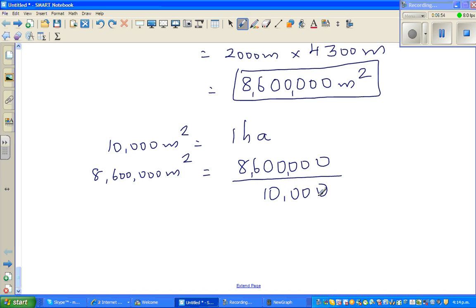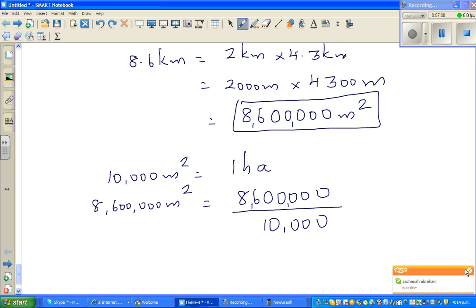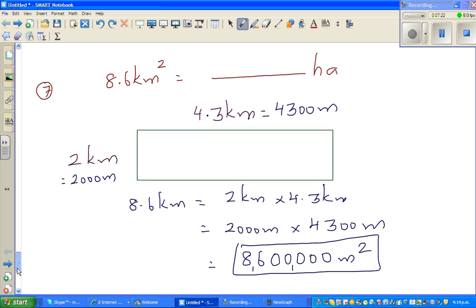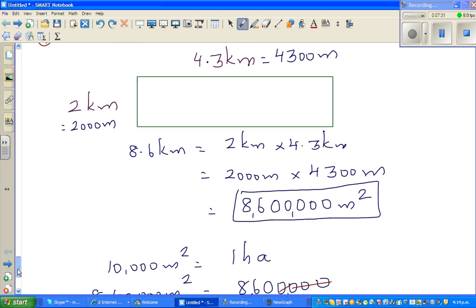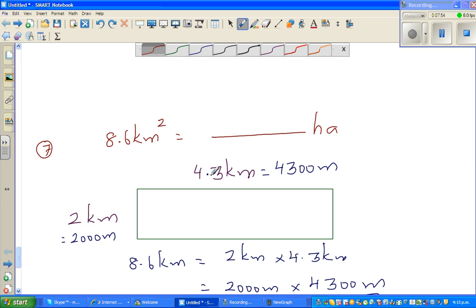Let me put the commas here so you can cancel. You're dividing by, so I can cancel this with this. So ten thousand, this is 860 hectares. I was just checking whether I have done any mistake. This is 4.3 kilometers which is 4300 meters, so this is 860 hectares.